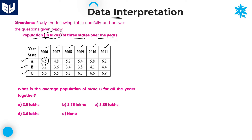In terms of lakhs, you need to multiply each and every value with 1 lakh. Here 4.5 lakhs means that is 4,50,000. Similarly, 3.2 lakhs means that is 3,20,000. Likewise, you need to multiply. That is the information which is given in this table.